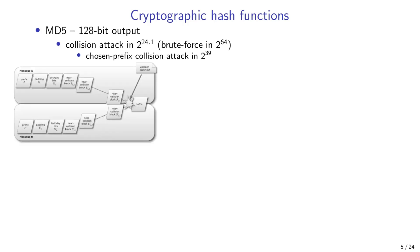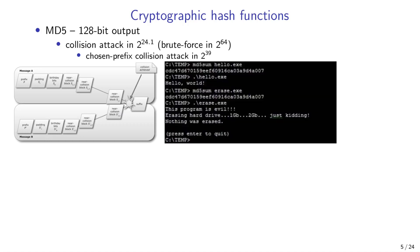MD5 is also vulnerable to the so-called chosen prefix collision attack, which can be performed in 2^39 operations — also easily done on a single computer. This means we can choose arbitrary prefixes for colliding messages, then calculate collision blocks that compensate for the changes in the prefixes, and produce colliding messages with different prefixes but the same MD5 hash value. As a proof-of-concept, we can create two executable files — hello.exe and erase.exe — with the same MD5 hash but different code: one prints hello world, while the other erases the hard disk.